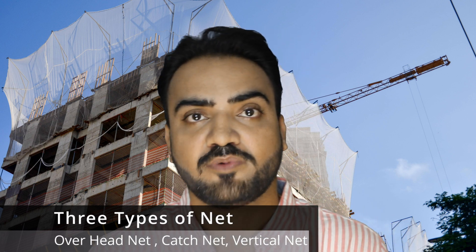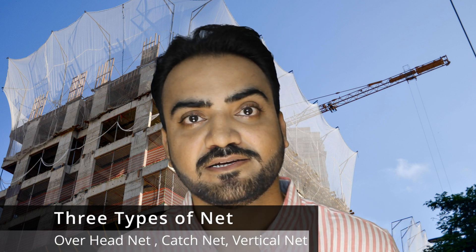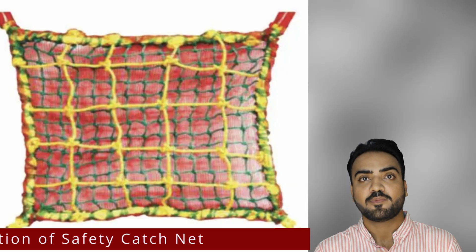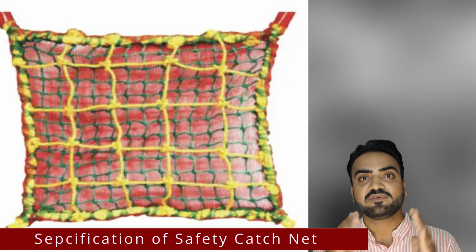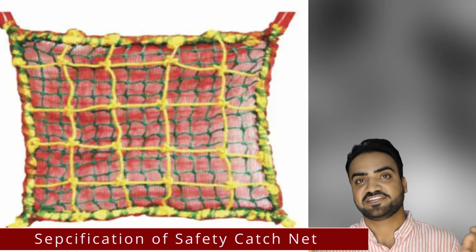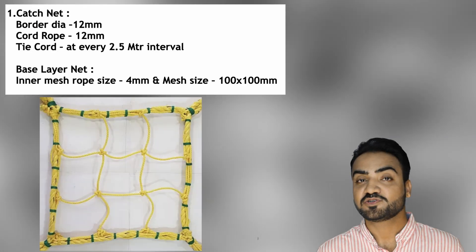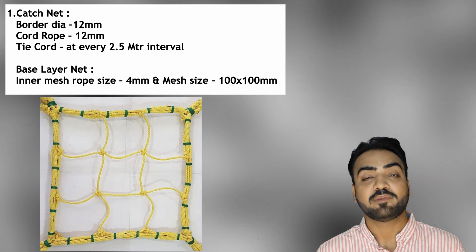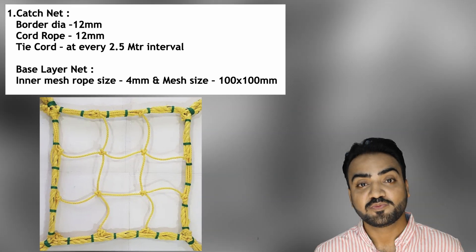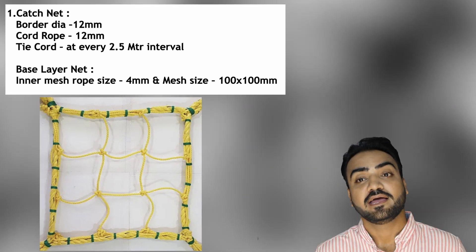There are three types of safety nets: catch net, overhead net, and vertical net. Let's talk about the specifications for the safety catch net.